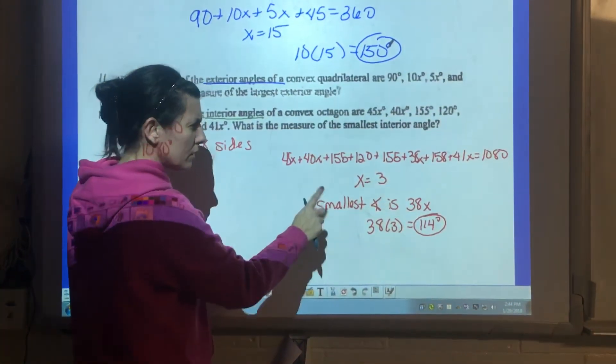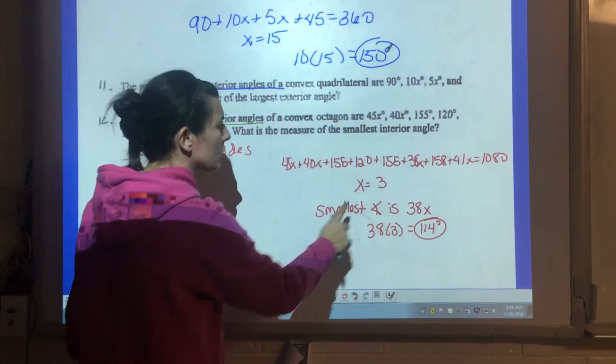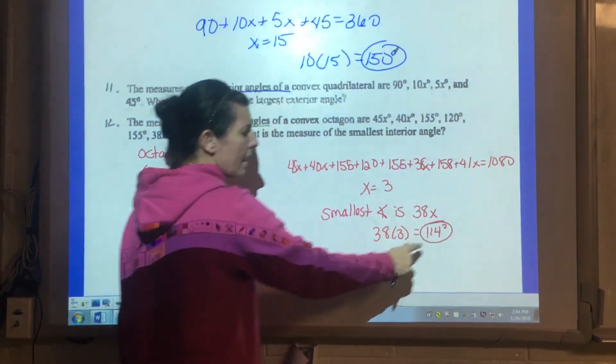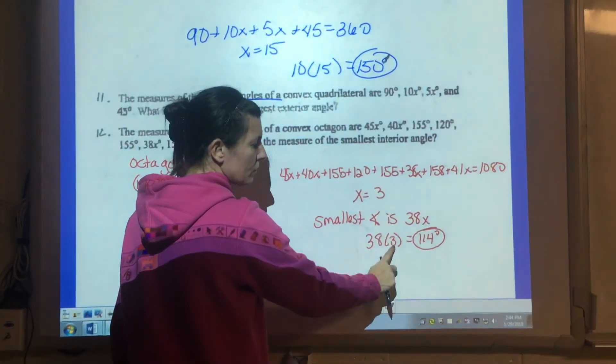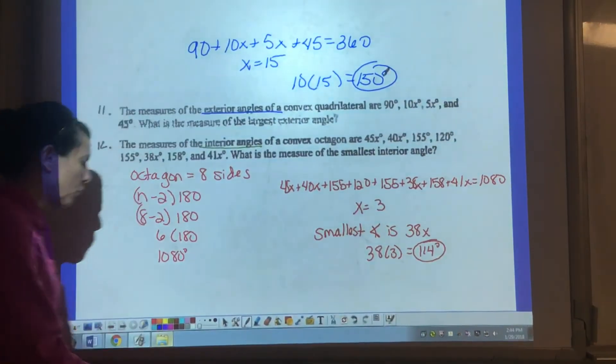They want to know the smallest angle in this case. And let's see, 38 times 3. 38x is going to be our smallest one. We plug in my x value. Smallest angle is 114.